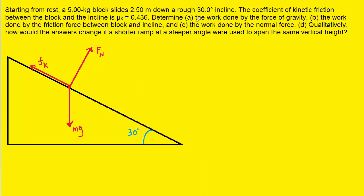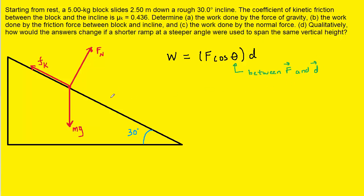Moving to part A, in order to calculate the work done by the force of gravity, we need to look at the equation that gives us the work done by a force. It tells us that to calculate the work we multiply the magnitude of the force times the cosine of an angle, and then multiplied by the displacement magnitude. That angle will always be measured between the direction of the force and the direction of the displacement. The displacement vector would be pointing down the ramp in this problem, because that is the direction the block is traveling.